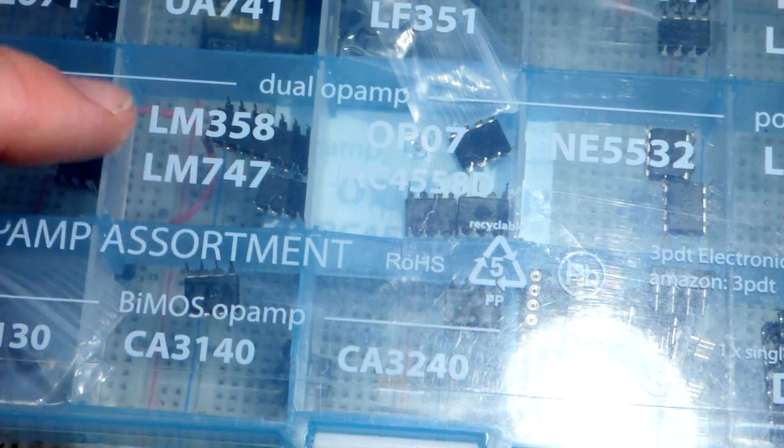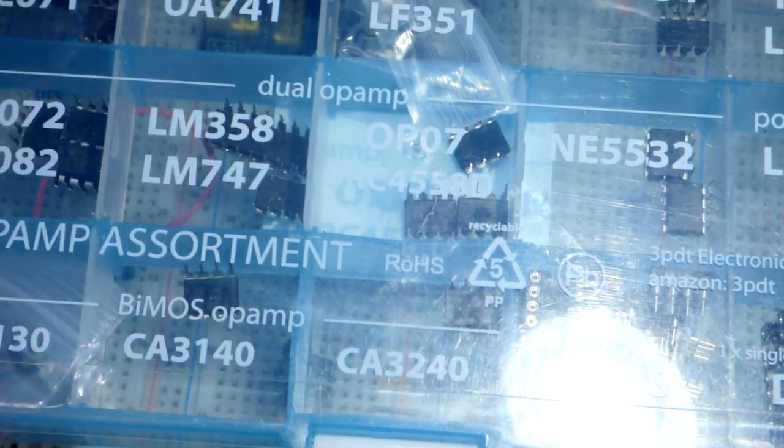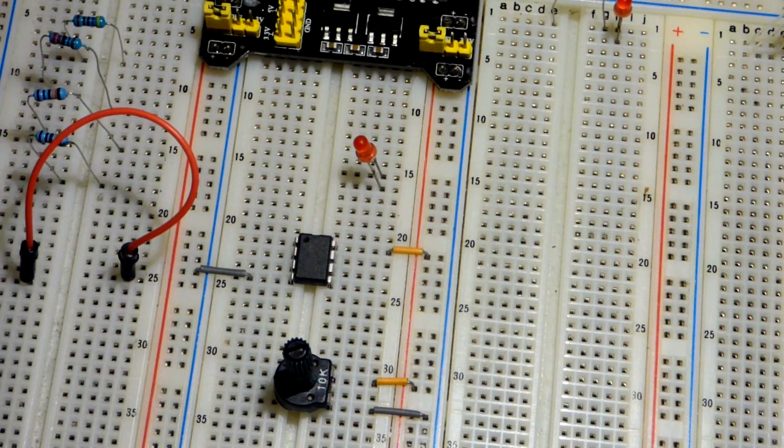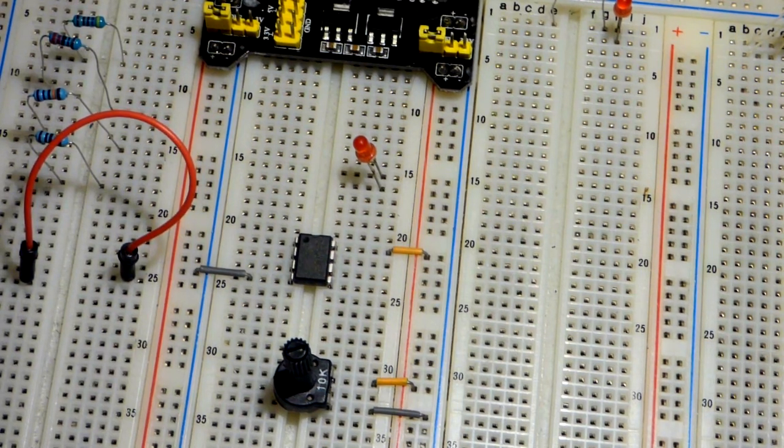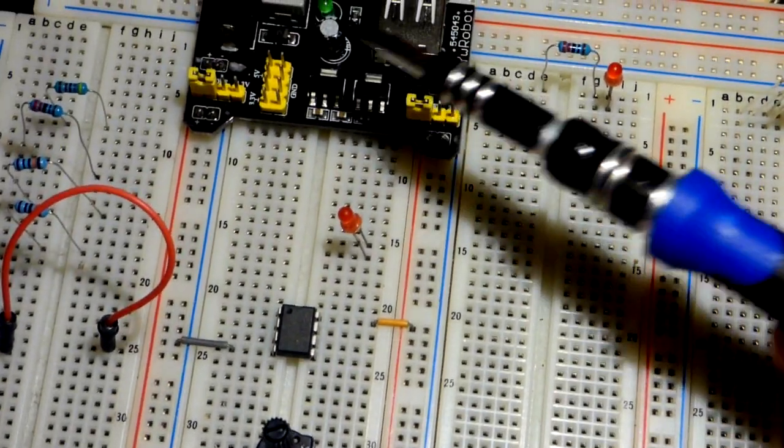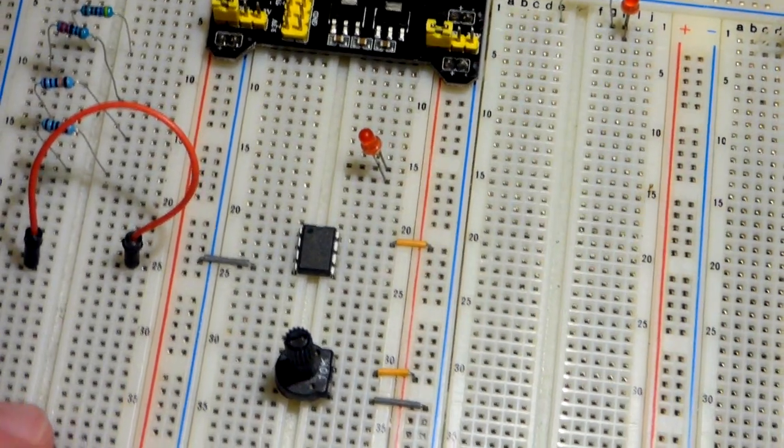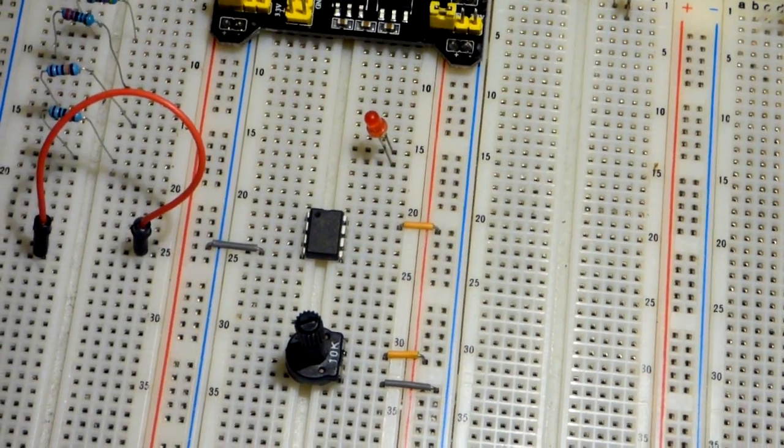In this video, we're going to make another circuit with the LM358, a dual op-amp, and we have it on the board here. We're only going to use a 5-volt power supply because this works pretty decently with a 5-volt power supply.